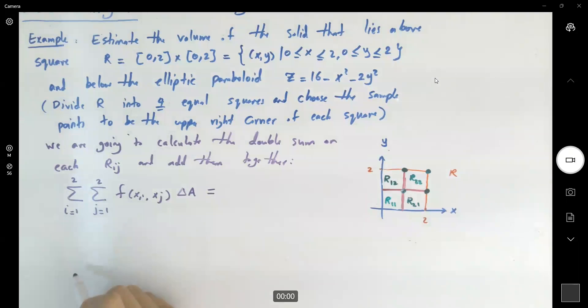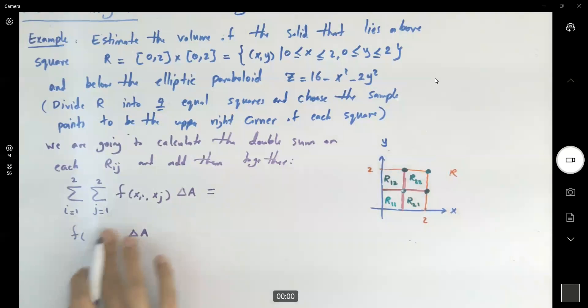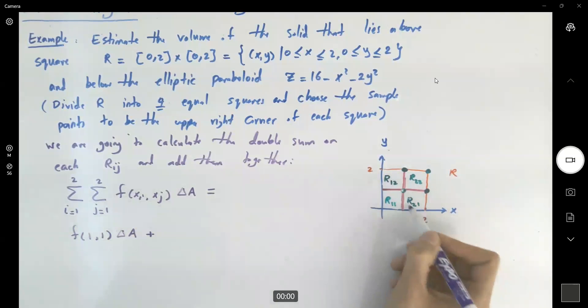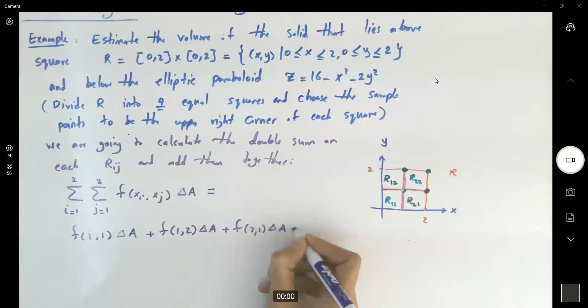Let us start by plugging 1. We get f of x1 and y1 multiplied by the area. Each of these little areas. This guy gives us x1, y1, 1 and 1. This pointer representing here. Let's just write this guy down here. Delta A plus the next point. For example, you can use 1 and 2 or you can use 2 and 1. It doesn't matter. f of 1 and 2 delta A plus f of 2 and 1 delta A plus f of 2 and 2 delta A.